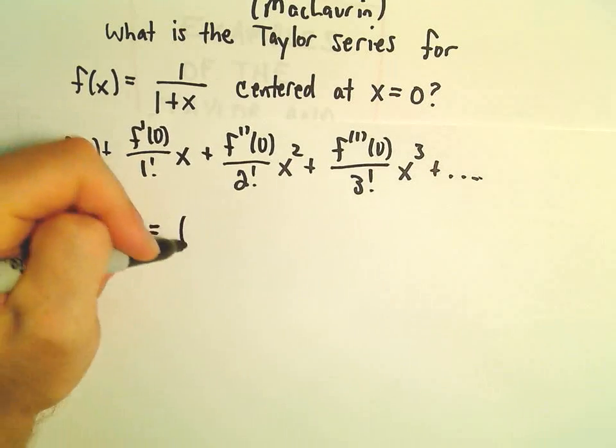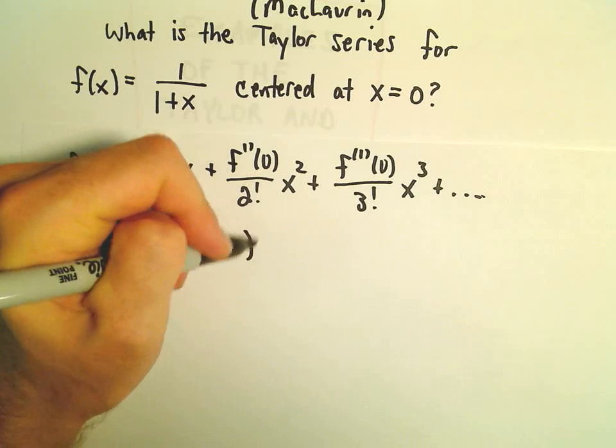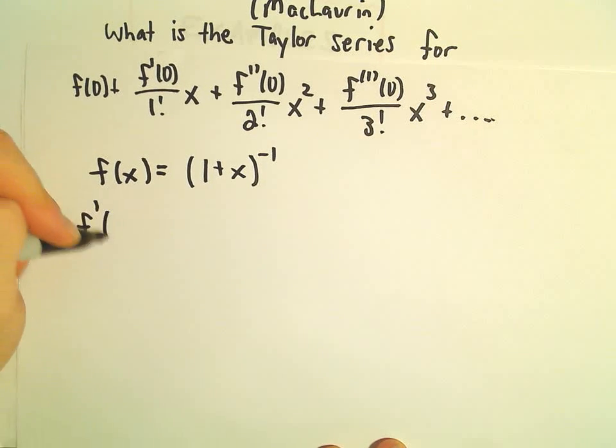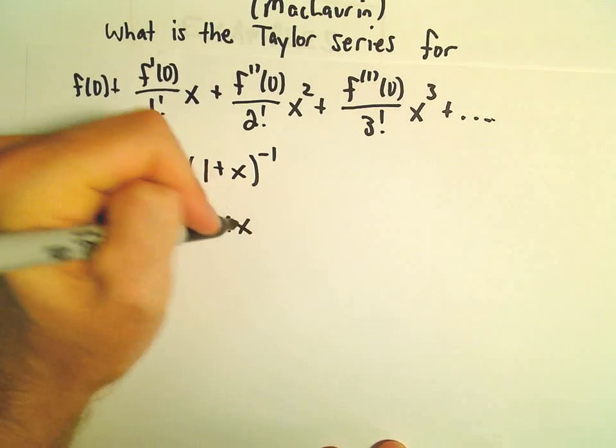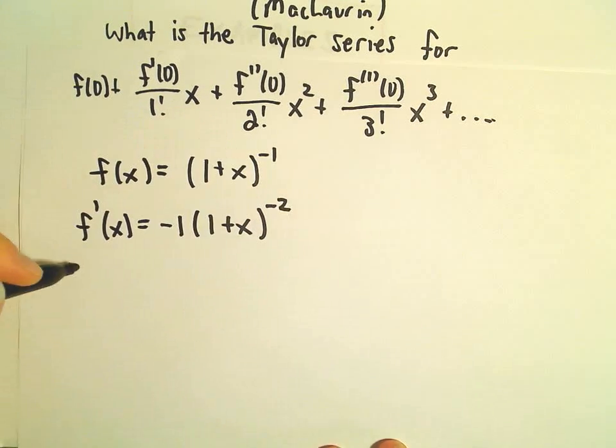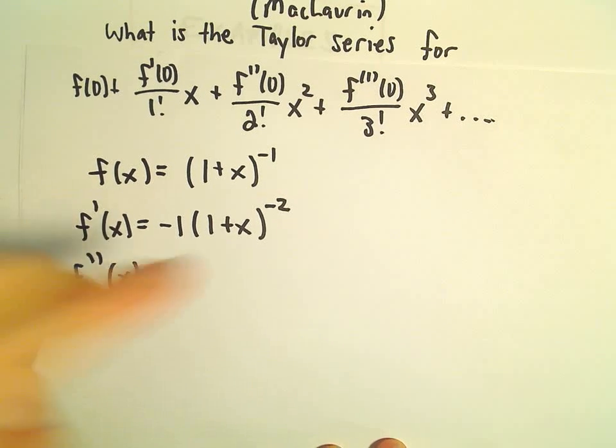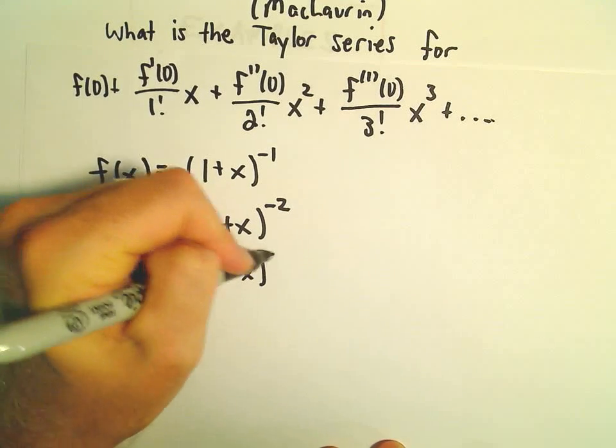So I'm going to start off by taking derivatives. I'm going to write 1/(1+x) as (1+x)^(-1). So let's see, our derivative, we would get -1 times (1+x)^(-2). Our second derivative, let's see, we would have positive 2 times (1+x)^(-3).